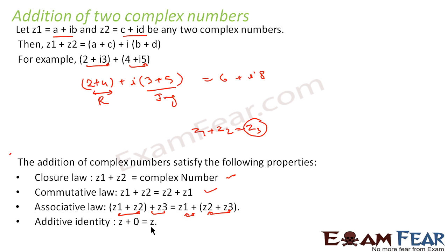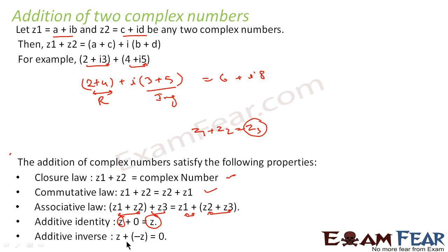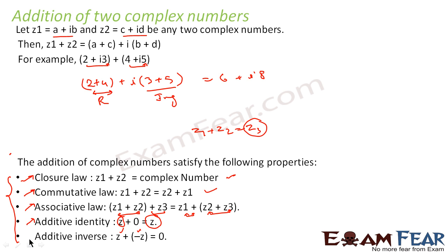Additive identity: there is a number zero — when you add it to a complex number, you get the same complex number. Additive inverse: for every complex number z, there exists a number minus z such that z plus (minus z) equals zero. So these are the five properties defined for addition: closure, commutative, associative, additive identity, and additive inverse.